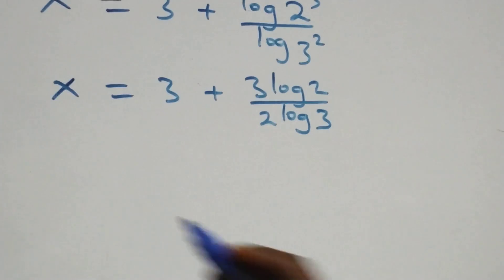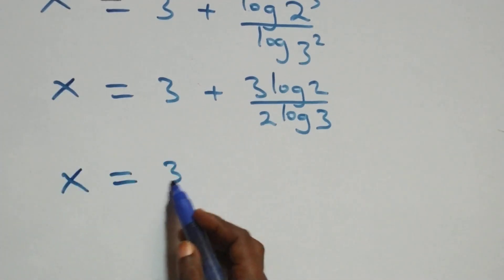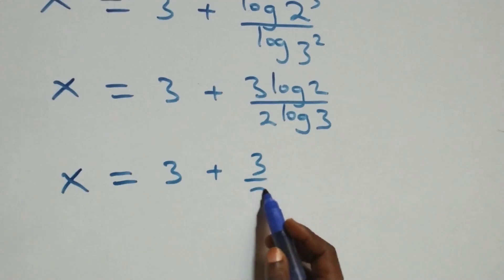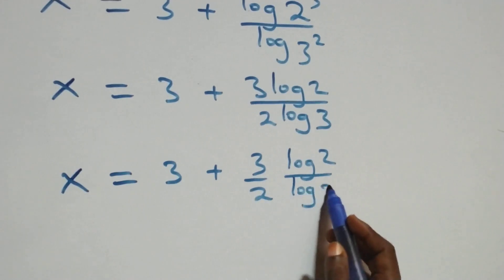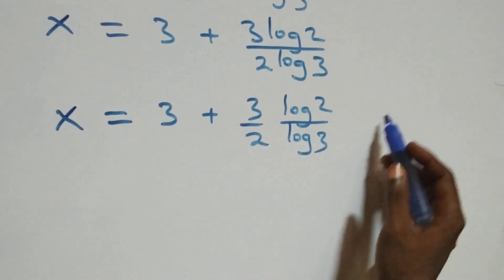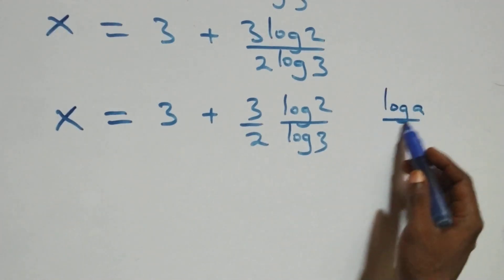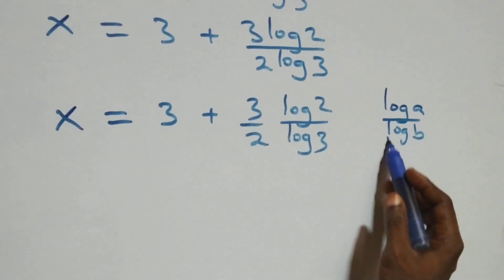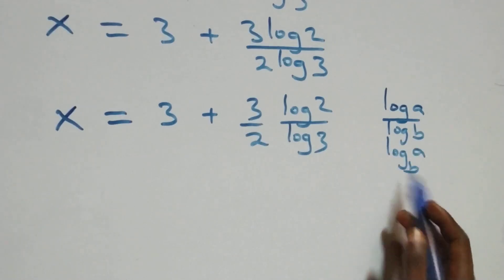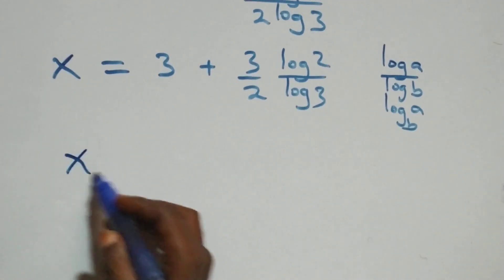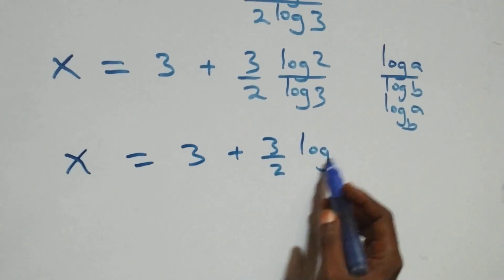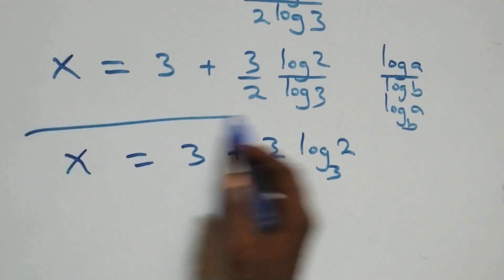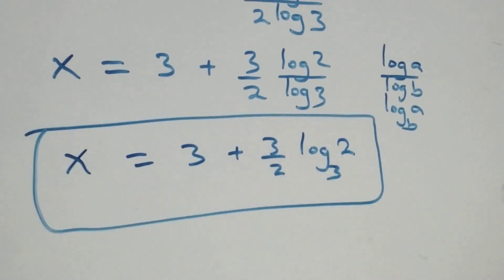We separate this as three over two times log two over log three. Applying the change of base formula — log a over log b equals log a to base b — we get x equals three plus three over two times log two to base three. So the value of x in this problem is three plus three over two log two to base three.